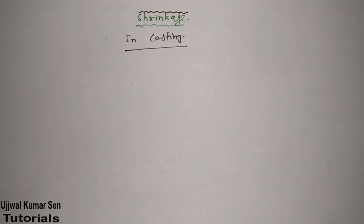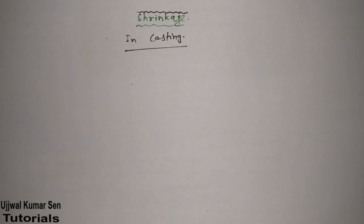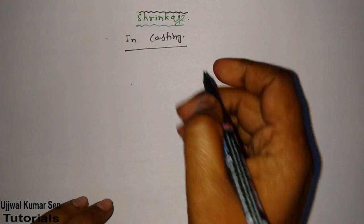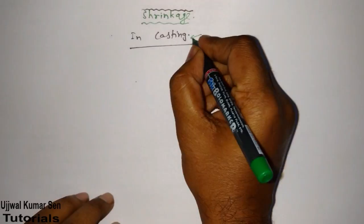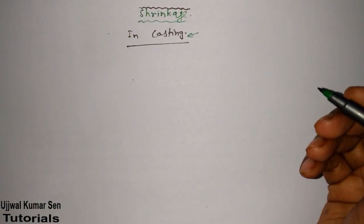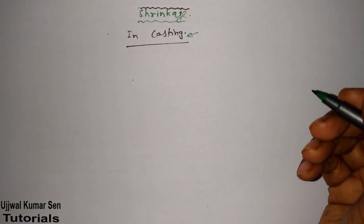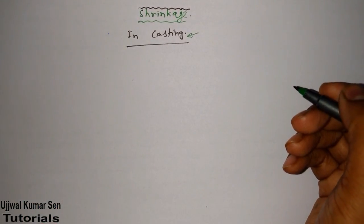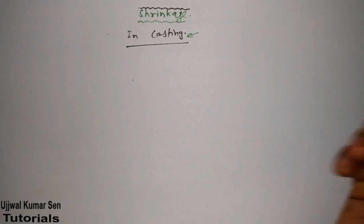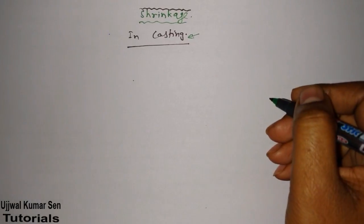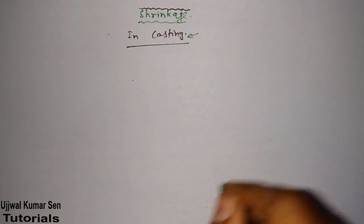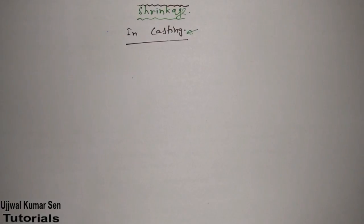In this video tutorial I'm going to share with you shrinkage in casting. Basically, what is shrinkage in casting? We take molten metal, pour it into a mold, and then take it out after solidification — that is known as casting. So what is shrinkage in this context?